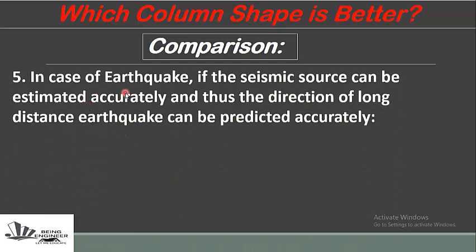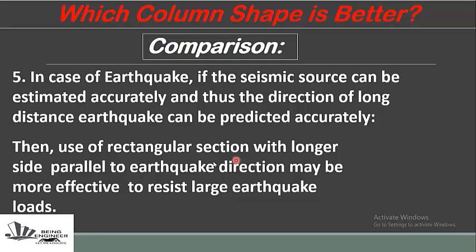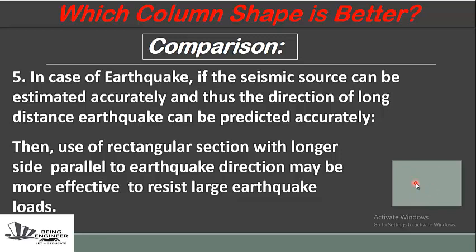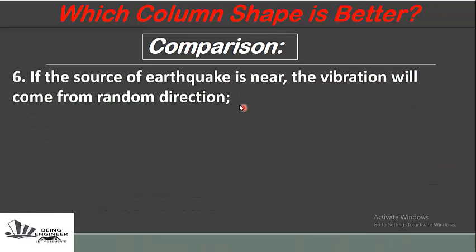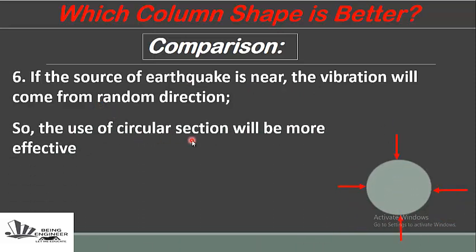In case of earthquake: if the seismic source can be estimated accurately and the direction of a long-distance earthquake can be predicted, then use of a rectangular section with its longer side parallel to the earthquake direction may be more effective to resist large earthquake loads. However, if the source of earthquake is near and vibrations come from a random direction, then the circular section will be more effective.